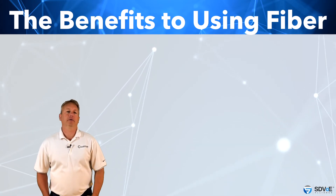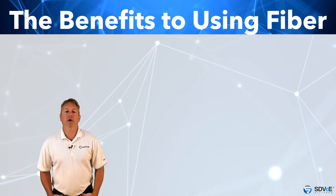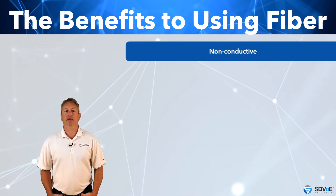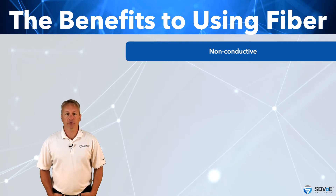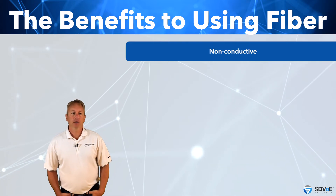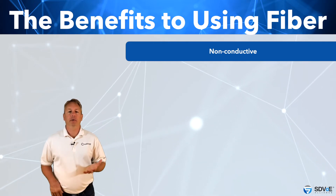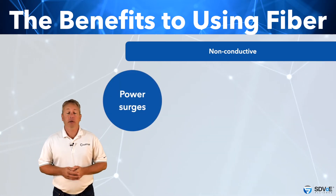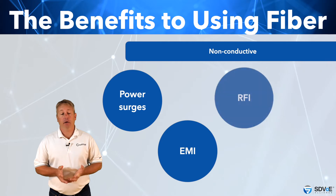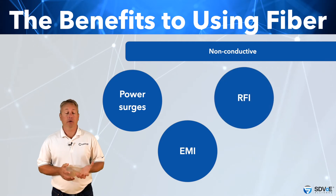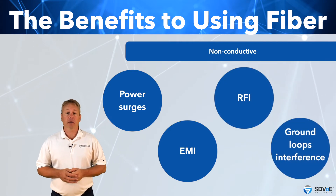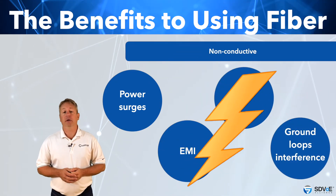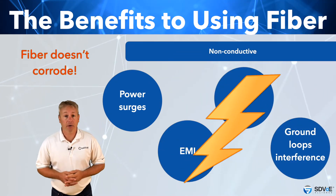Unlike copper and other types of medium, fibre has no metallic or electrically conductive components to it. This makes fibre immune to things like power surges, EMI, RFI, ground loop interference and lightning strikes. It also means it won't corrode over time.